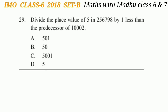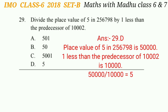Question 29: Divide the place value of 5 in 2,56,798 by 1 less than the predecessor of 10,002. The place value of 5 in 2,56,798 is 50,000, since 5 is in the ten-thousands place. The predecessor of 10,002 is 10,001, and 1 less than that is 10,000. Dividing 50,000 by 10,000 gives 5. The answer is option D.